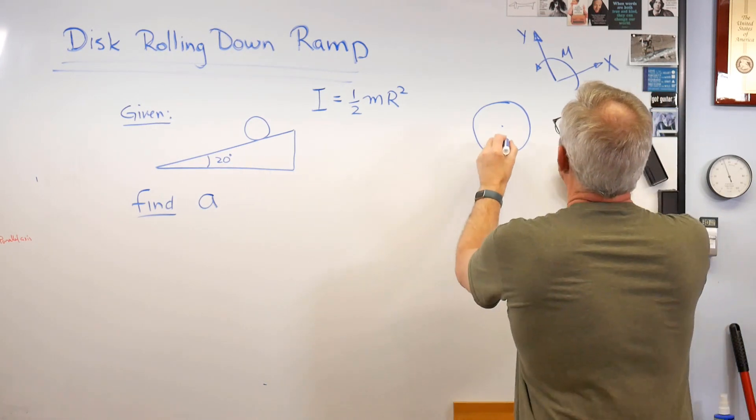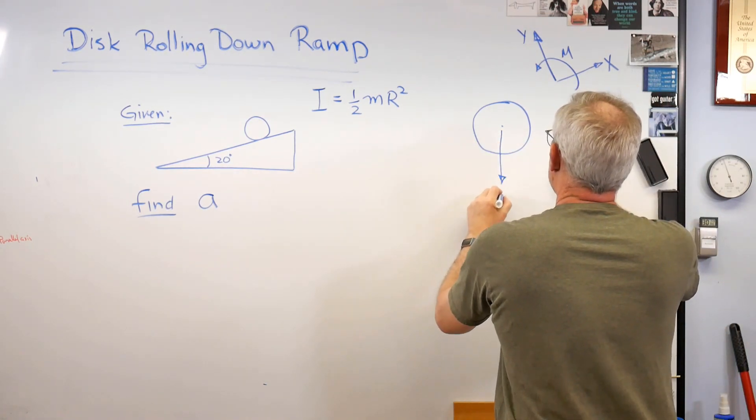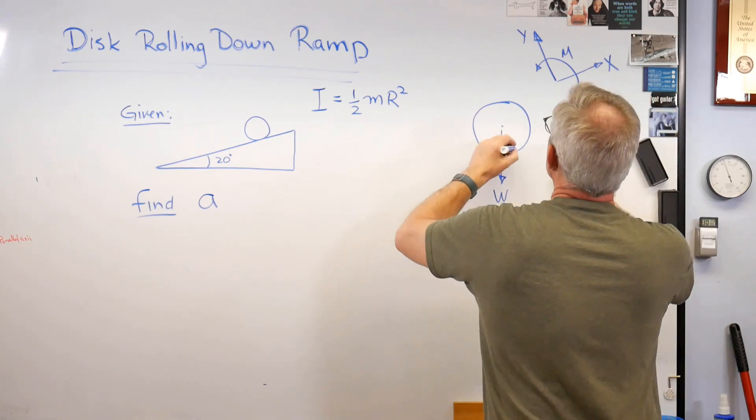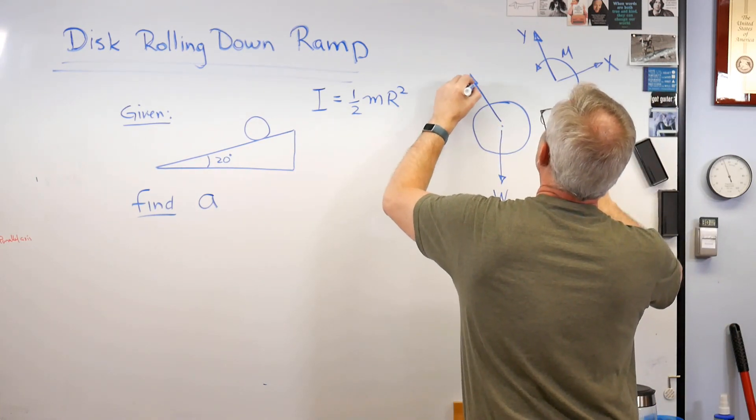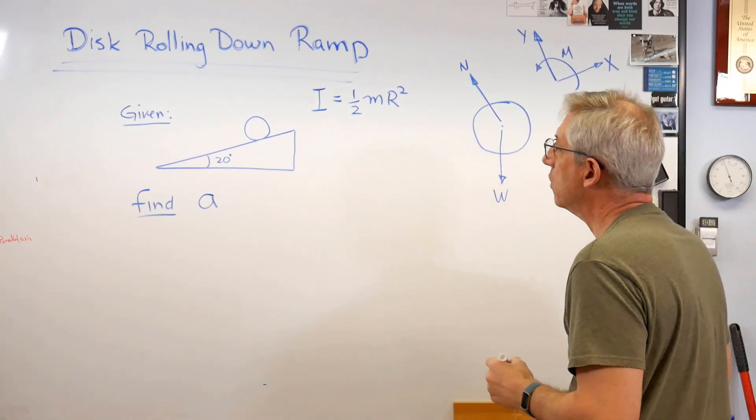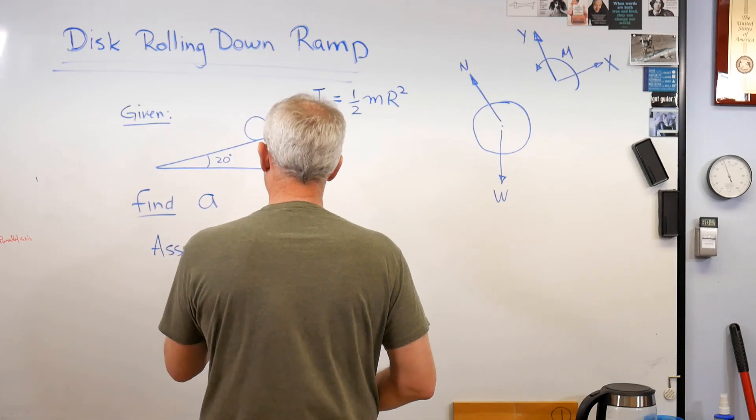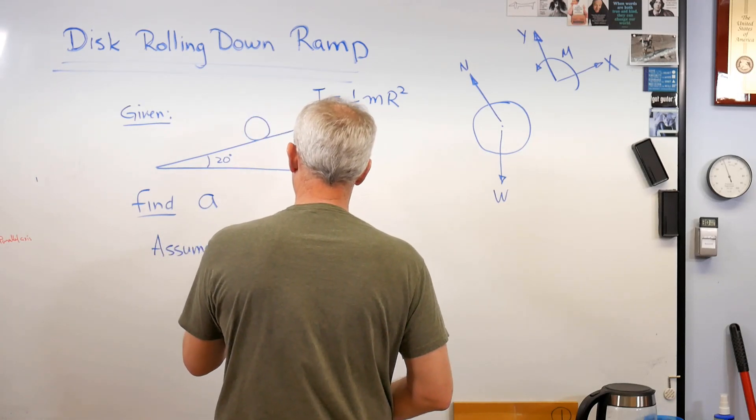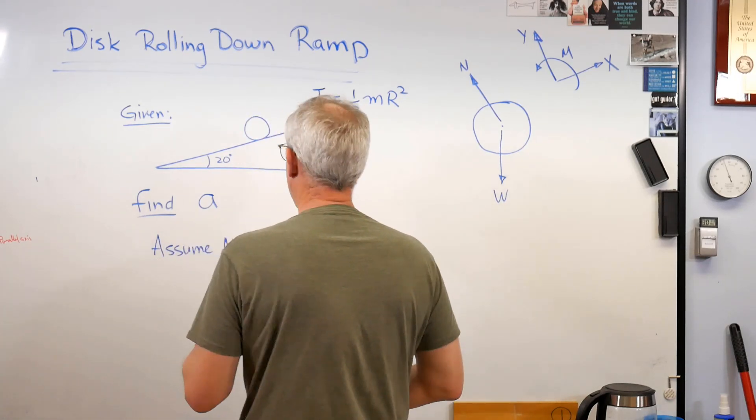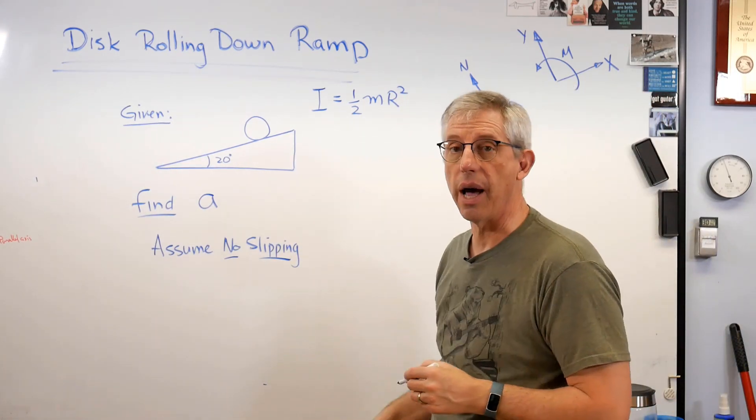Let's see. We're going to need a weight because gravity always goes down. So that's weight. There's a normal force. Let's put that on here. Normal force against the ramp. Now we're going to assume no slipping. So whatever the coefficient of friction there, it's enough that the disc isn't going to slide. All right.